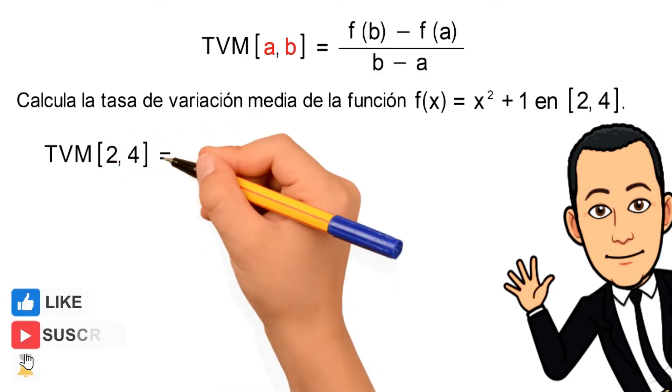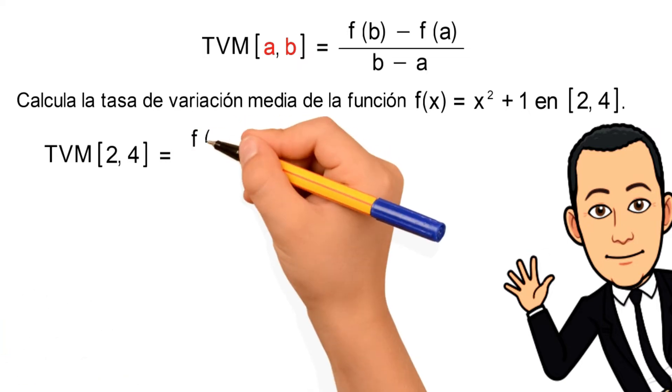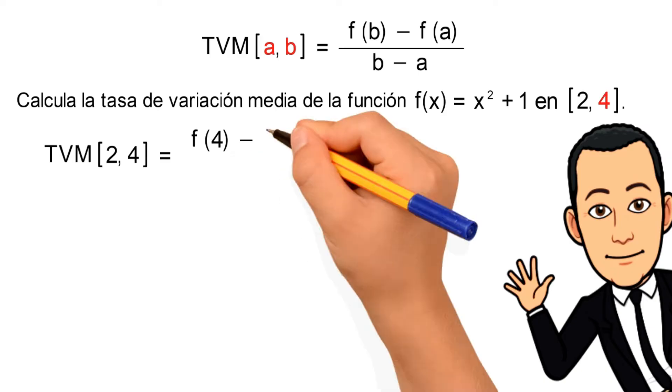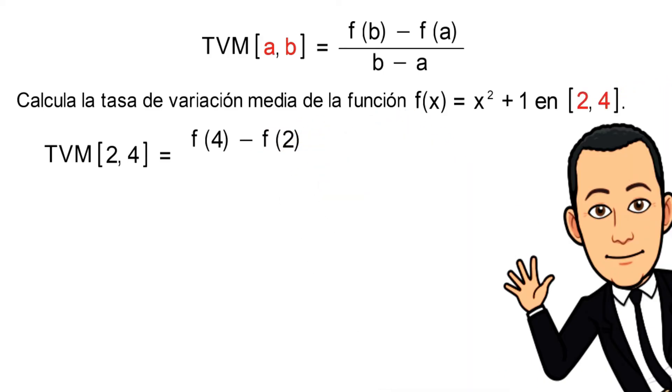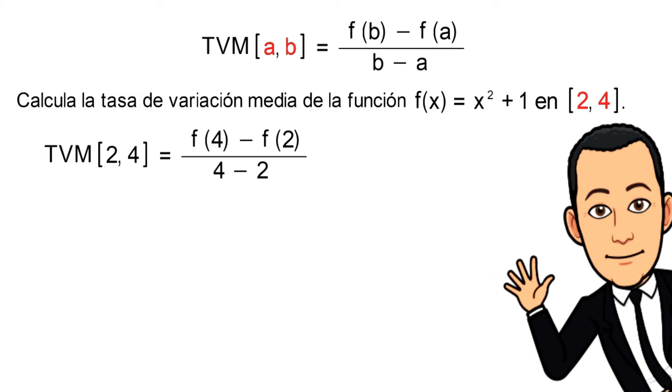...es igual al cociente entre la función evaluada en el valor del extremo derecho del intervalo menos la función evaluada en el valor del extremo izquierdo del intervalo, dividido para la diferencia entre el valor mayor menos el valor menor.